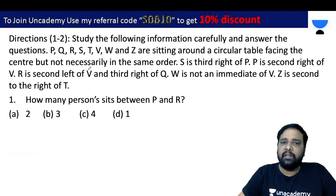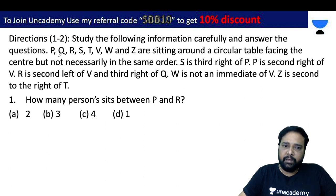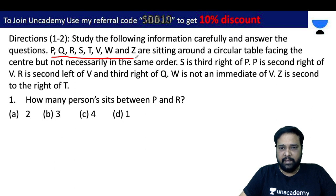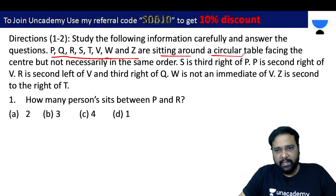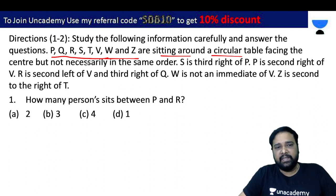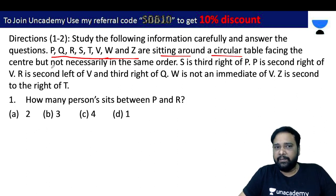Study the following information carefully and answer the questions given below it. Eight persons — P, Q, R, S, T, V, W, Z — are sitting around a circular table, facing the center.